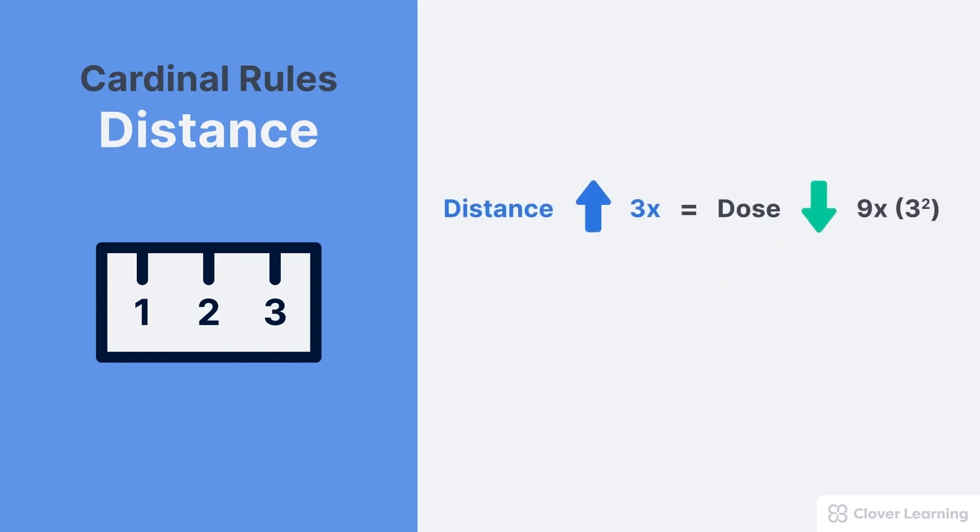Here's an example of how the inverse square law applies to occupational dose. If we increase our distance from the source by a factor of three, our dose decreases by a factor of three squared, which is nine.